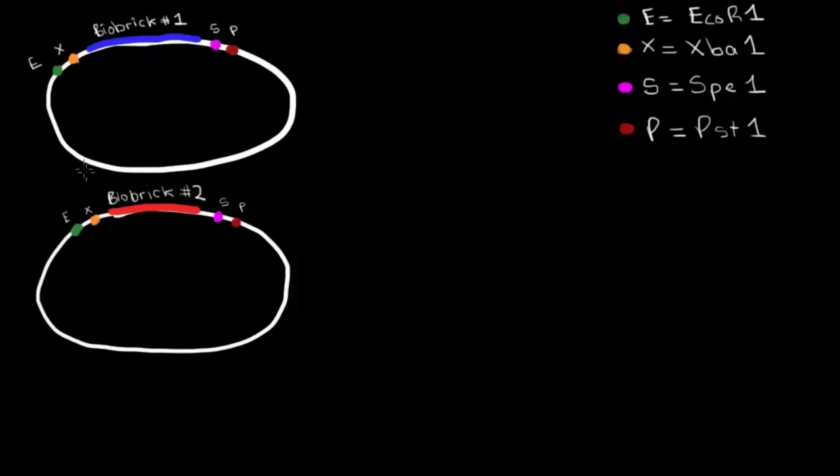So here I've denoted two plasmids, and whenever I show you a plasmid, I'd like you to imagine that it always has an origin of replication, so the place that it reproduces itself from, and an antibiotic resistance gene.